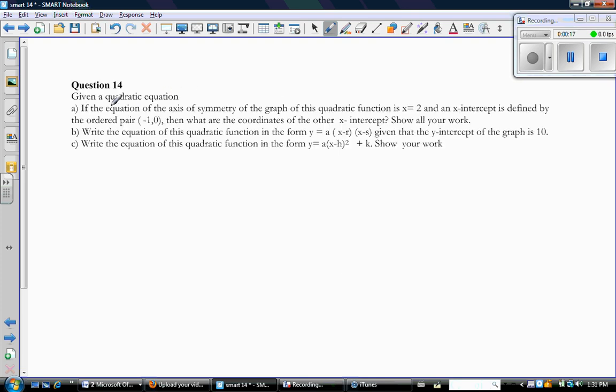Given a quadratic equation, if the equation of the axis of symmetry of the graph of this function is at x equals 2, and an x-intercept is defined by the ordered pair (-1, 0), then what are the coordinates of the other x-intercept? Show all your work.